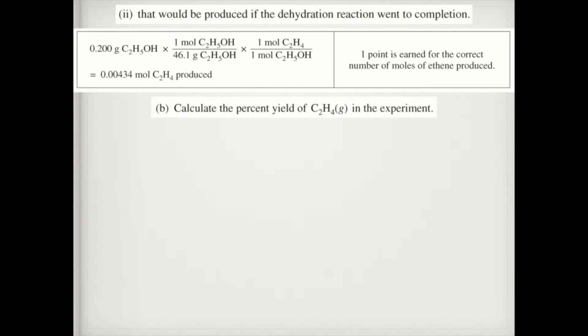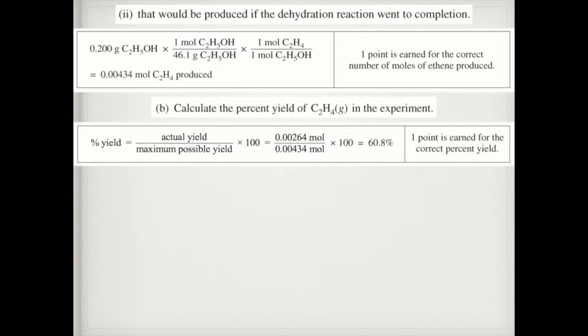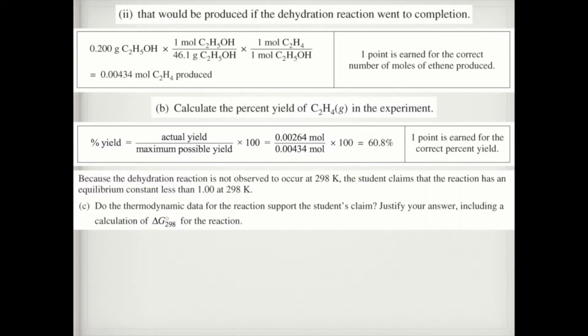Part b: Calculate the percent yield of C2H4 in the experiment. The actual yield is what they actually got in the lab, so that goes on top. The theoretical is part ii, if all of it had actually reacted. Take 0.00264 from part i, divide by 0.00434 from part ii, multiply by 100, and I got my percent yield.